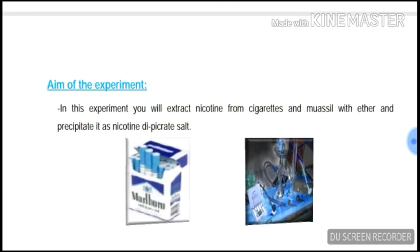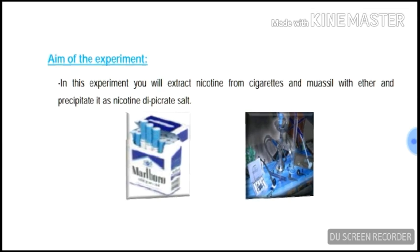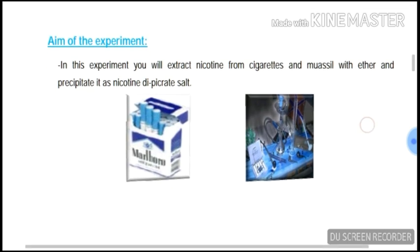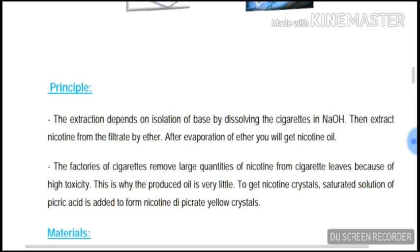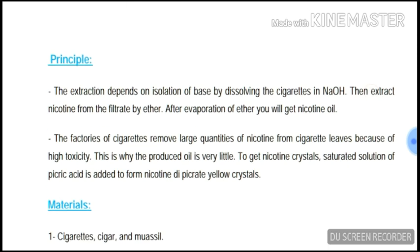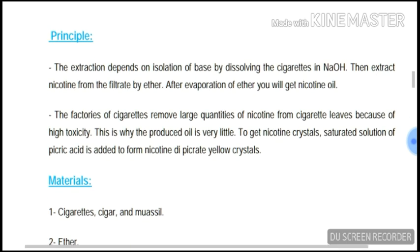Aim of the experiment: in this experiment you will extract nicotine from cigarettes using ether and precipitate it as a nicotine picrate salt. Principles of the extraction: this depends on isolation of the base by dissolving the cigarette in ammonia, then extracting nicotine from the filtrate by ether. After evaporation of the ether, you will get nicotine oil.